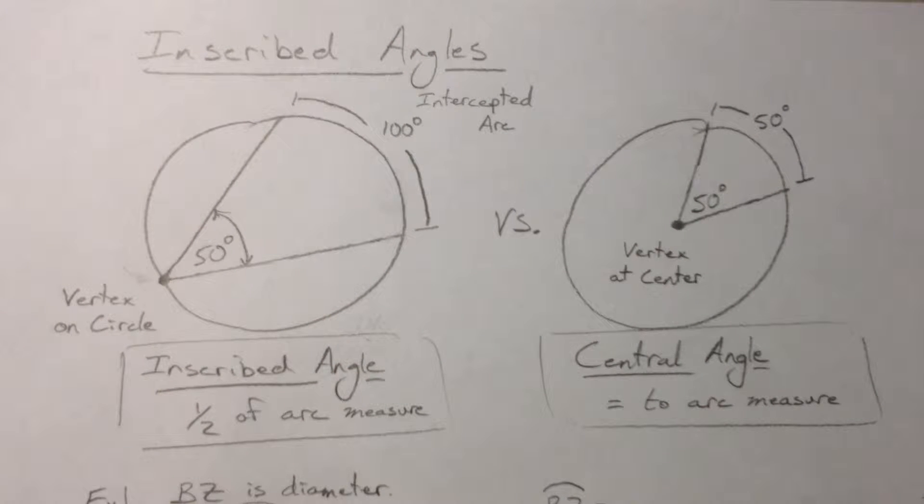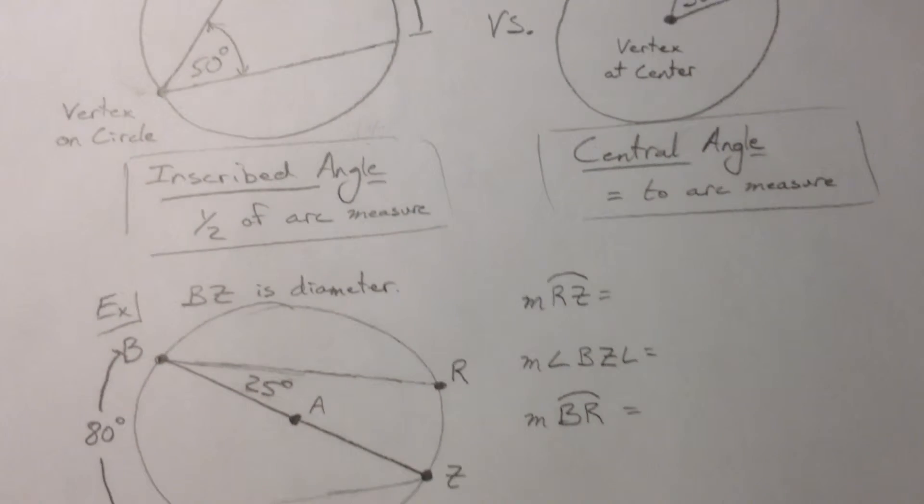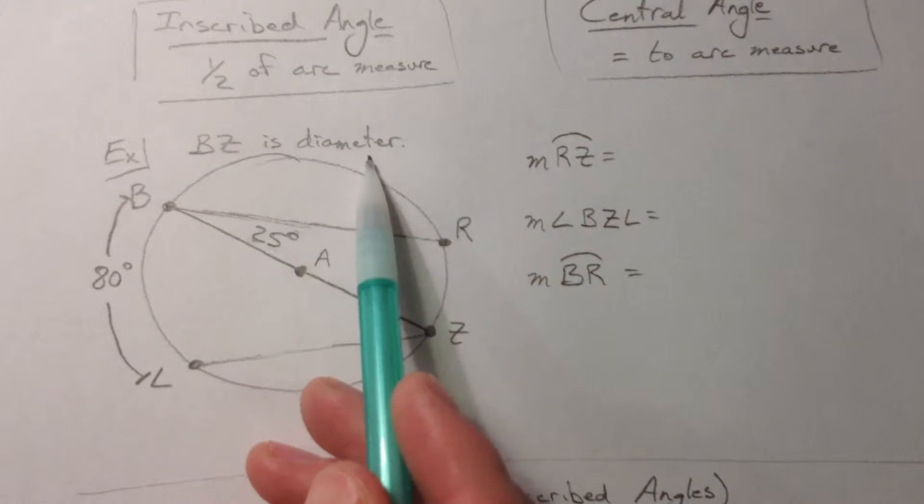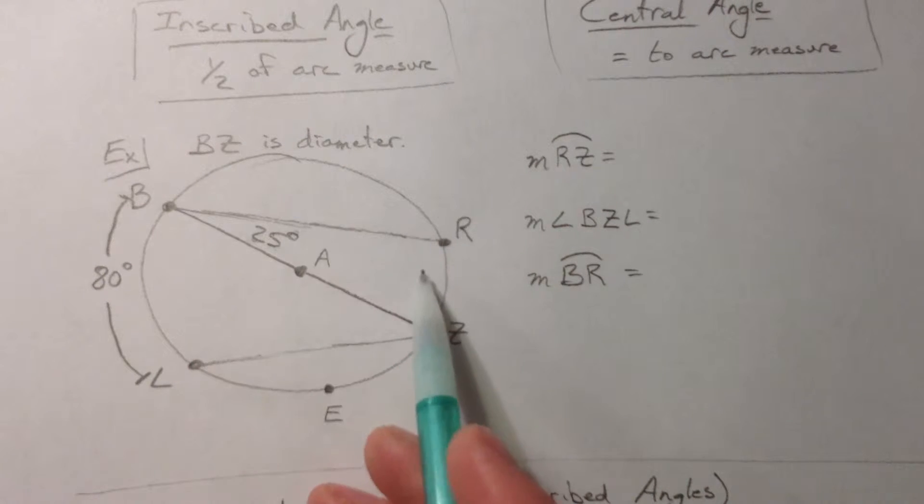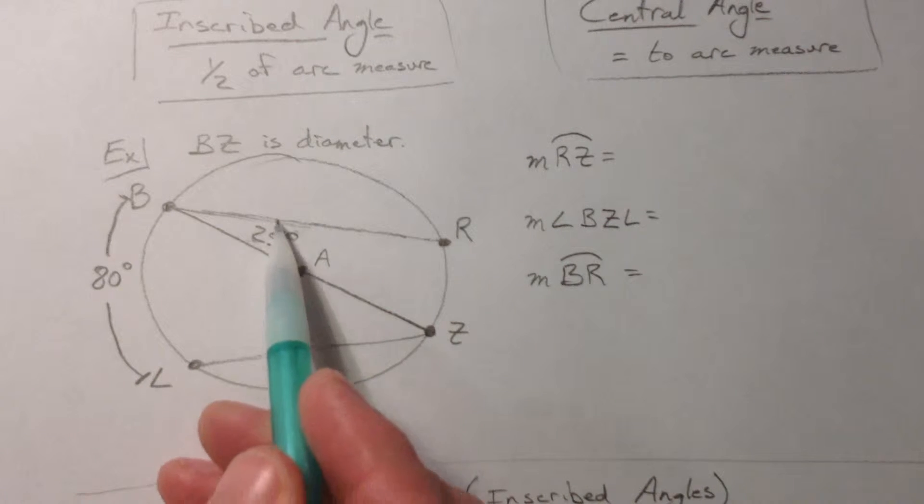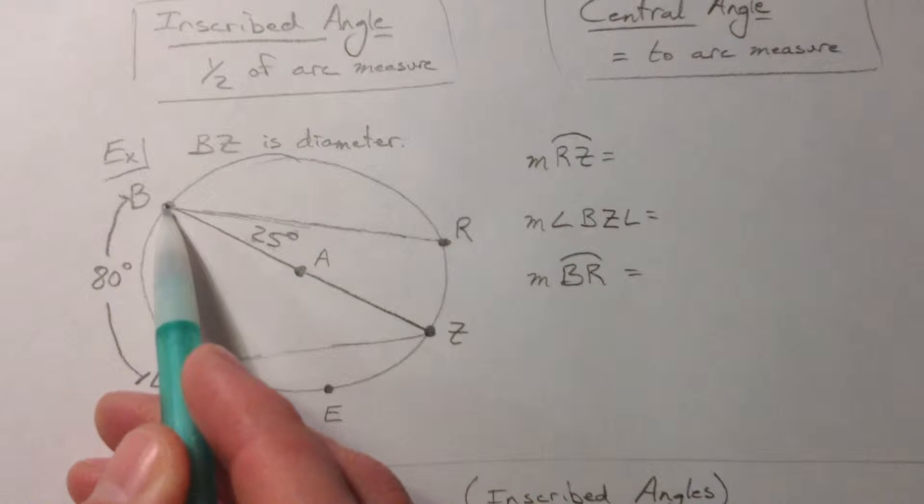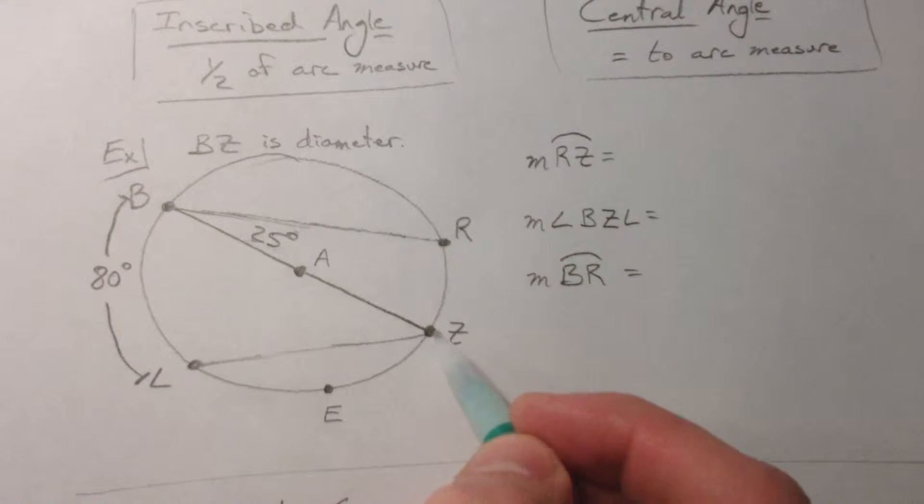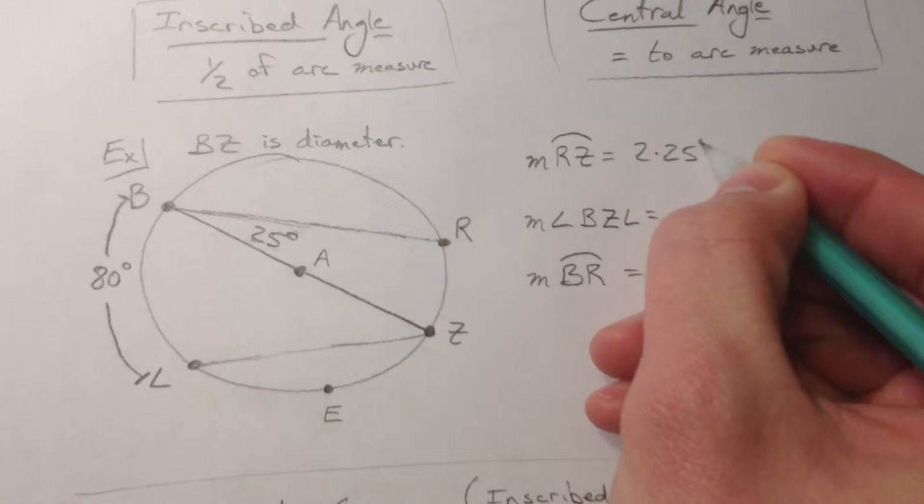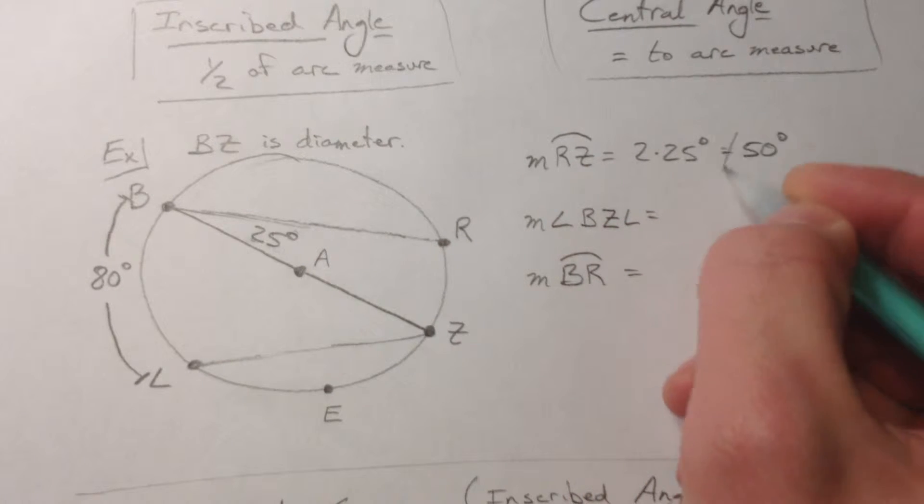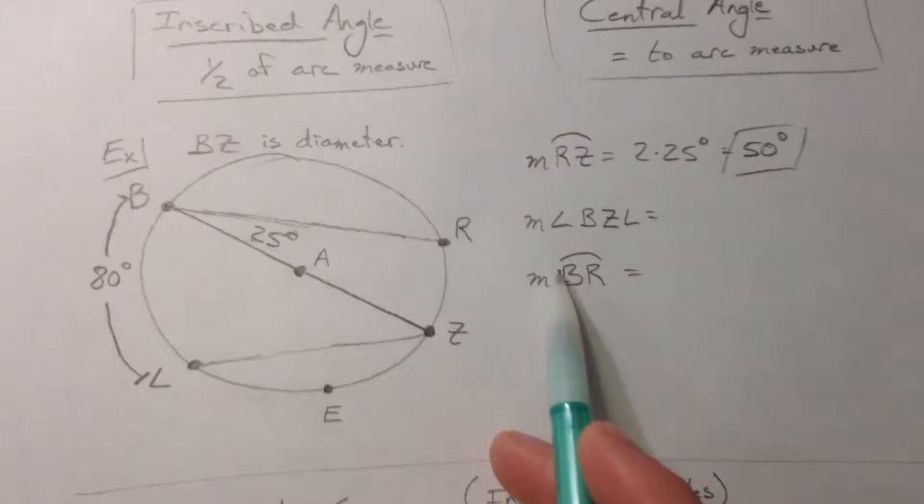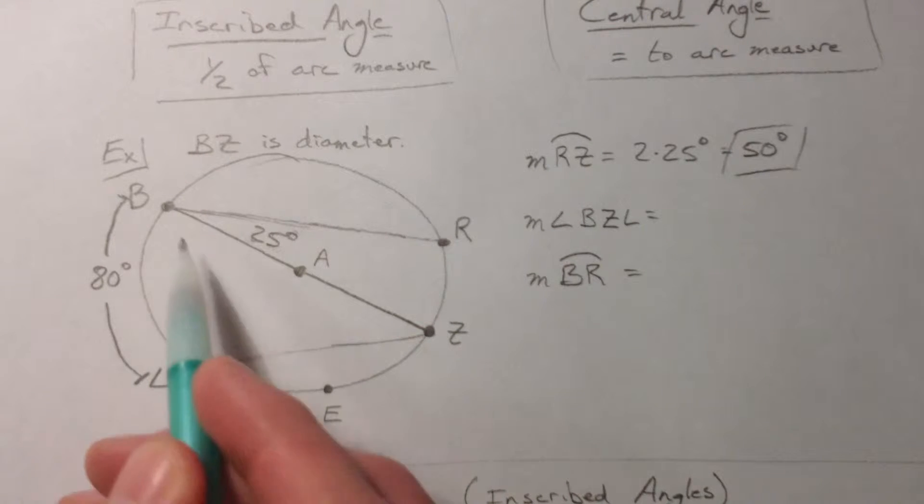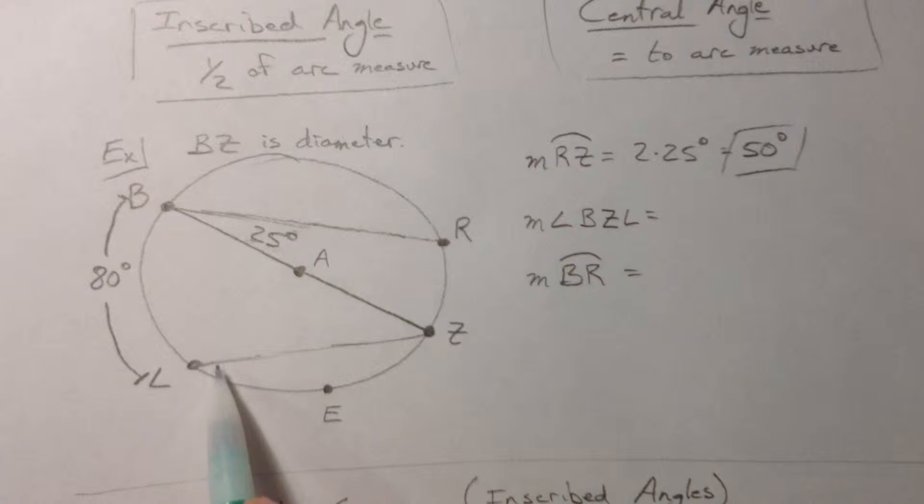So for example in this picture we've got a circle and BZ is given that it's a diameter. We have this angle RBZ is 25, it's an inscribed angle because B is on the circle. So then we know arc RZ, which is the intercepted arc, is 2 times 25 or 50 degrees. And I have this intercepted arc 80, so if I want to find angle BZL, the inscribed angle, I could just do 80 divided by 2